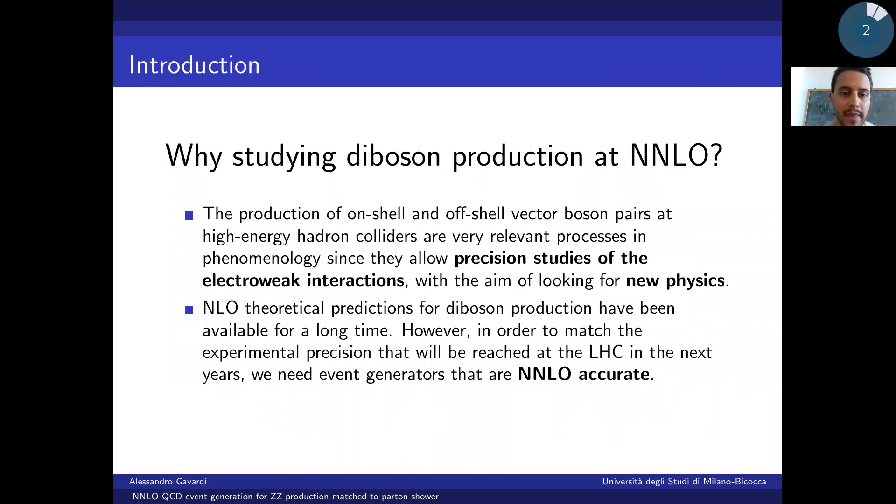Let's begin with a couple of questions. Why should we study Z-boson production and do we really need to push our calculations to NNLO accuracy?